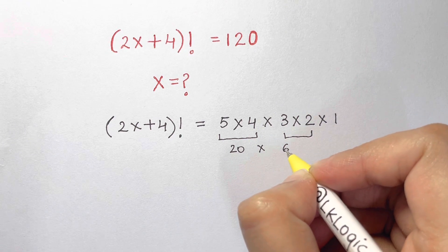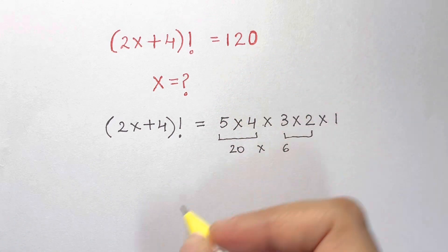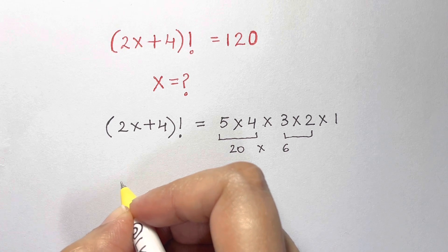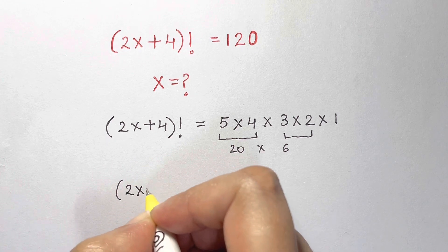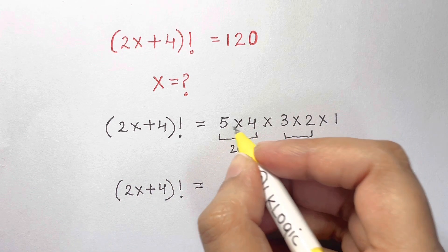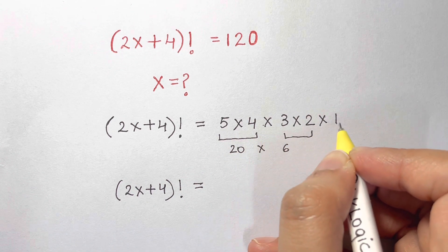Now we have this (2x + 4)! so I'm going to write that (2x + 4)! is equal to the whole thing: 5 × 4 × 3 × 2 × 1, which is equal to 5!.